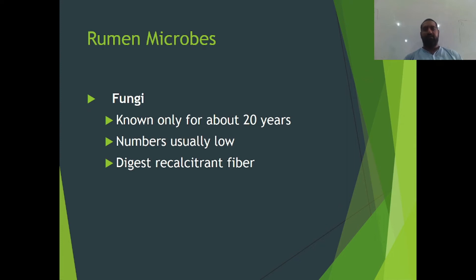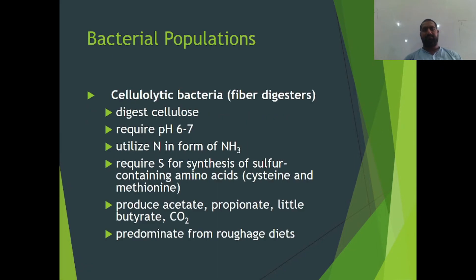Then there is fungi — their numbers are usually low and they digest fiber. There are also cellulolytic bacteria which digest fiber, which is why they are called fiber digesters — they digest cellulose. They require a pH of 6 to 7, utilize nitrogen in the form of ammonia, and require sulfur for the synthesis of sulfur-containing amino acids, which are cysteine and methionine. They produce acetates, propionates, and a little butyrates and carbon dioxide.